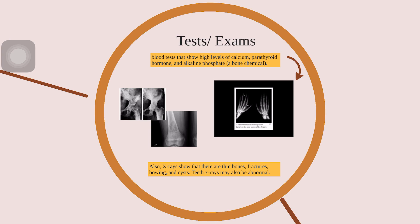A blood test showing high levels of calcium, parathyroid hormone, and alkaline phosphatase — a bone chemical — can aid diagnosis. X-rays may show thin bones, fractures, bowing, and cysts, and bone density scans may also be abnormal.